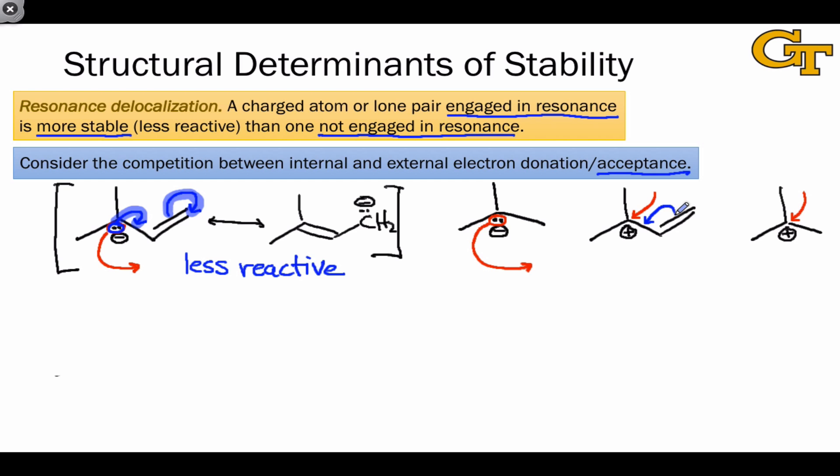Notice that both curved arrows are pointing toward the cationic carbon and will result in its conversion to a neutral center. This is the competition idea again, and what we can conclude from it is that the delocalized cation is less reactive toward electron sources now than the localized cation is.